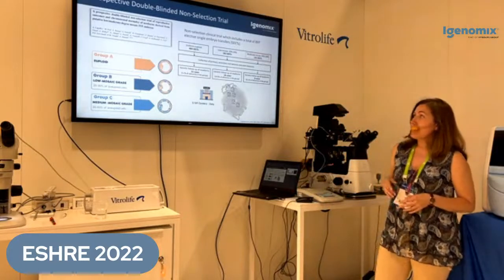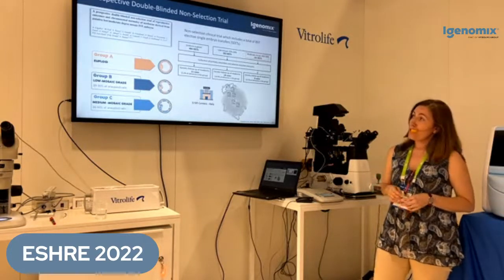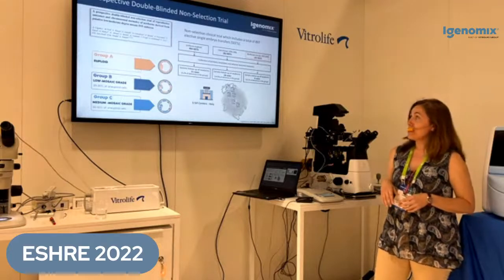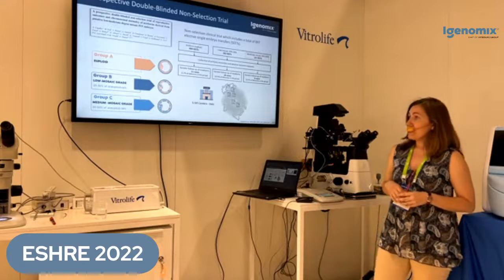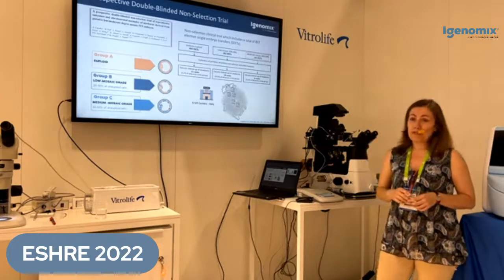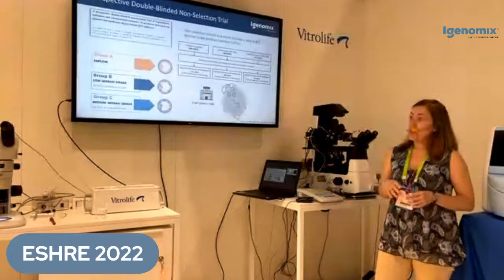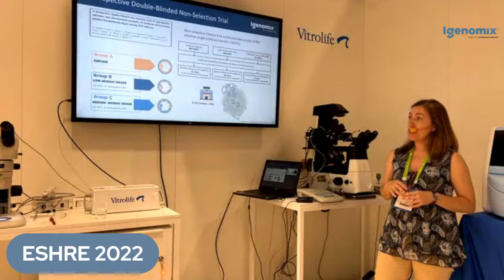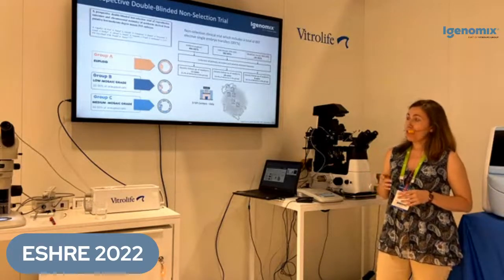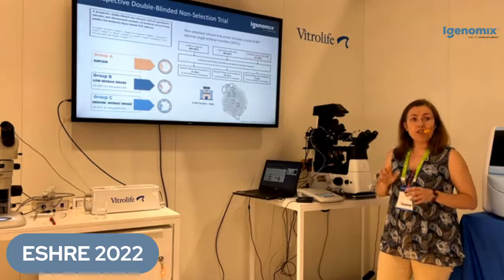In order to evaluate the reproductive outcomes of low mosaic embryos, our colleagues at Hygenomics Italy performed a prospective double-blinded non-selection trial in which a total of 297 single embryo transfers were performed. In order to maintain the blinding of this study, every time they diagnosed embryos with low mosaic grade between 20 to 30% aneuploid cells and embryos with medium mosaic grade between 30 to 50% aneuploid cells, they reported these embryos as euploid. In this way, the clinics performed the transfer of the embryos considering only the morphology.